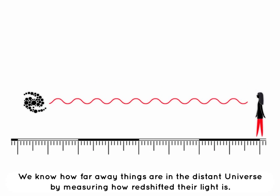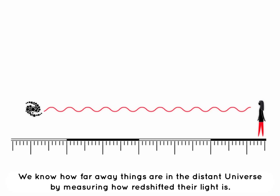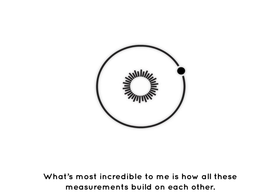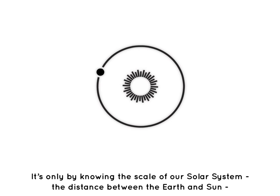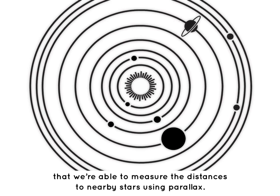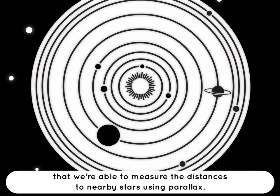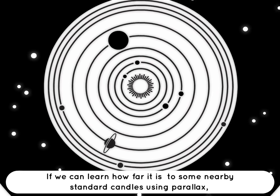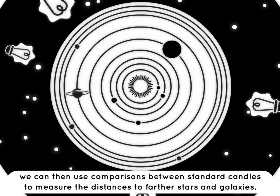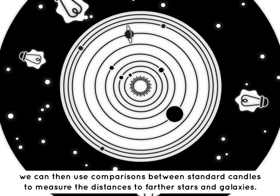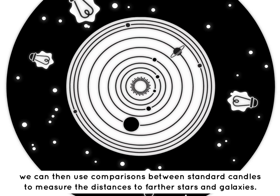We know how far away things are in the distant universe by measuring how redshifted their light is. What is most incredible is how all these measurements build on each other — it is only by knowing the scale of our solar system, the distance between the Earth and the Sun, that we are able to measure the distances to nearby stars using parallax. If we can learn how far it is to some nearby standard candles using parallax, we can then use comparison between standard candles to measure distances to farther stars and galaxies.